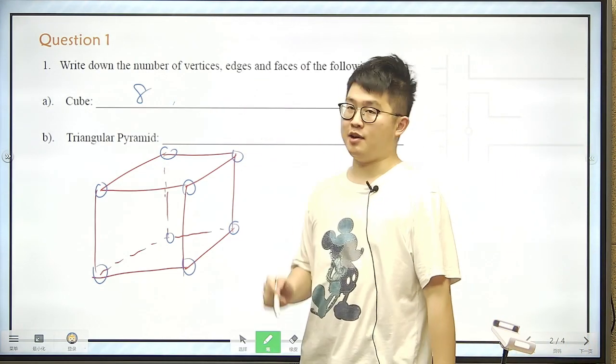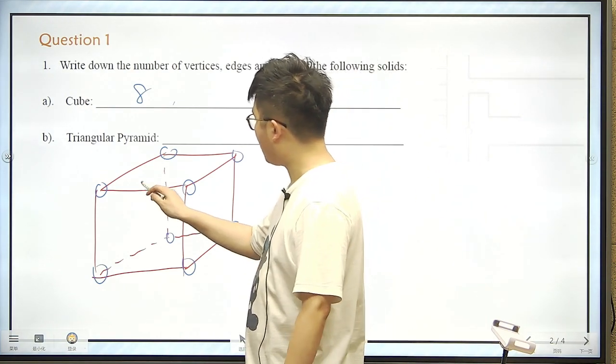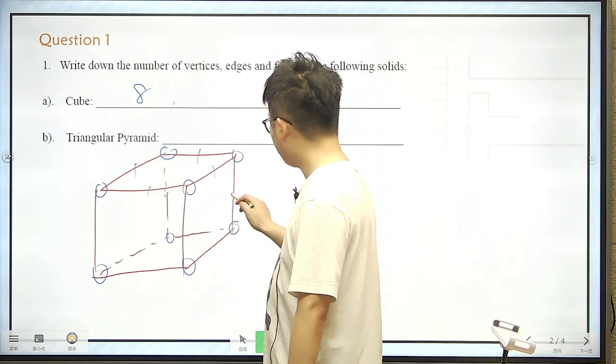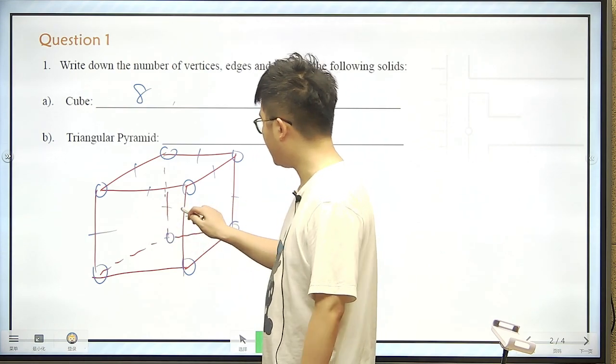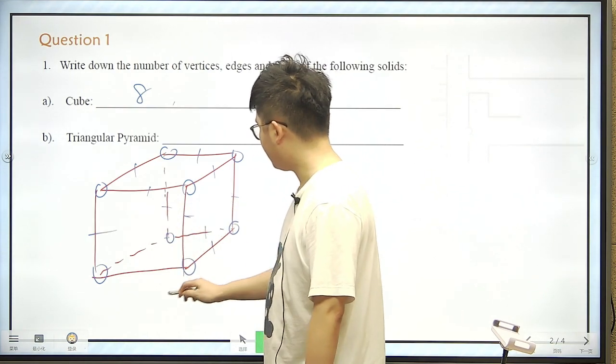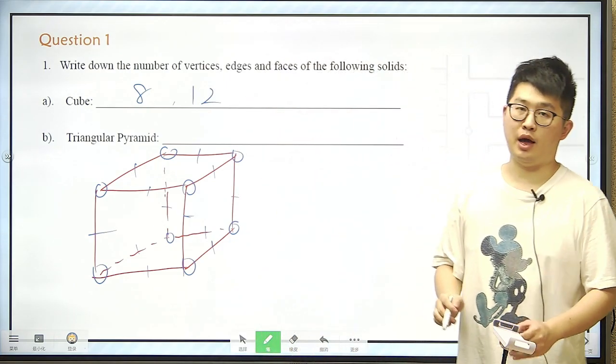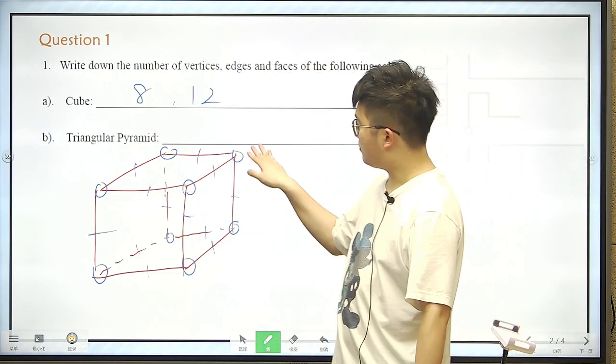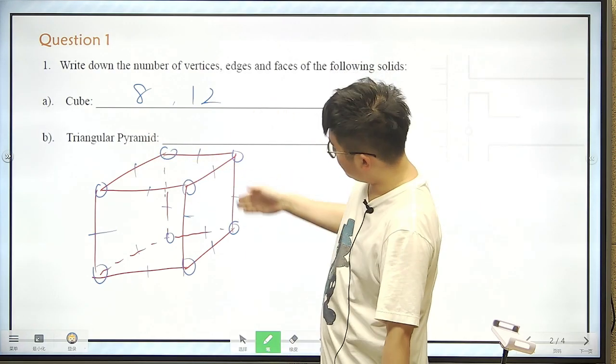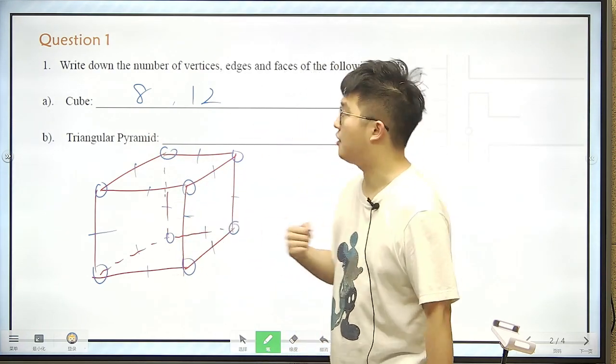So now, second question about edges. Edges, still clear. 1, 2, 3, 4, 5, 6, 7, 8, and 9, 10, 11, 12. So there are 12 edges. We count them down from the top side, and those vertical, and on the bottom side.